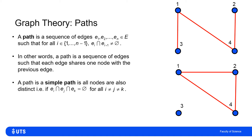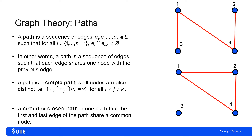A path is called a simple path if all nodes it goes through are distinct — it never revisits the same node. A circuit, sometimes called a closed path, is one where the first and last edge of the path share a common node. For example, in the bottom graph, going one to two to four to one is a closed path because the path starts at one and ends at one.